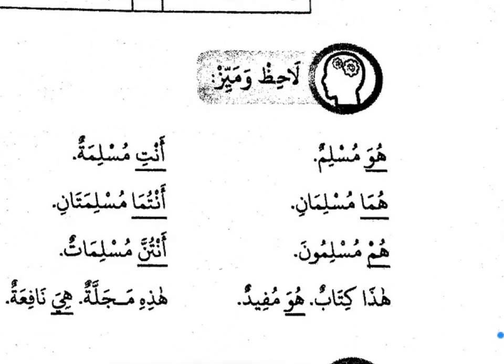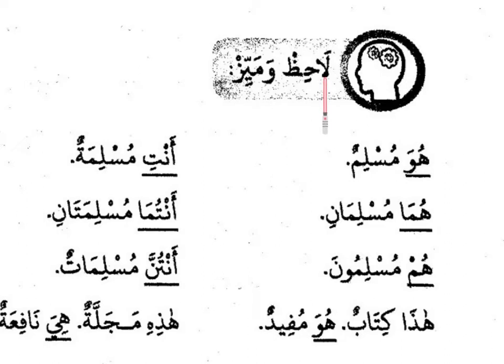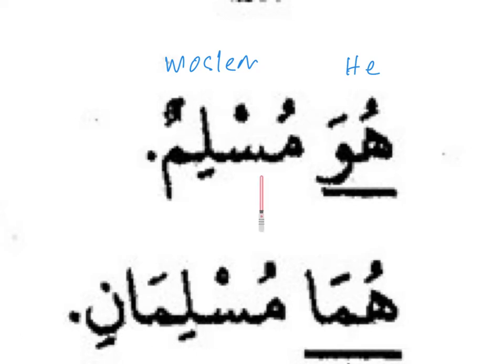Let us look at some examples of the Domir Munfasil. The instruction says 'lahidh wa mayizh' — observe and differentiate. The first example: the sentence is 'huwa muslim.' Huwa means 'he' and muslim is someone who embraces Islam. The word muslim here is a mufrad (singular) word, and at the same time it is also muzakkar (masculine). Since this is muzakkar and singular, the Domir you use must also be singular and muzakkar, so we say huwa — 'huwa muslim.'